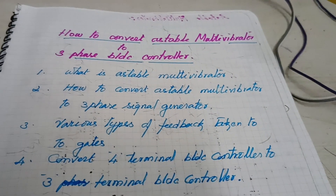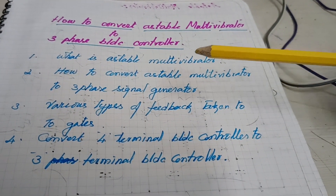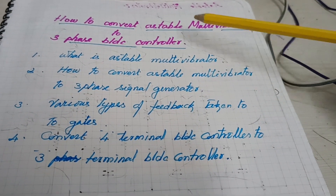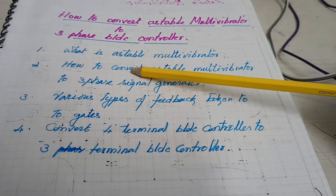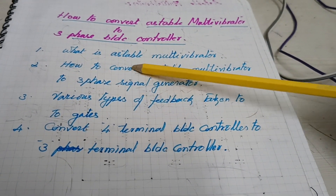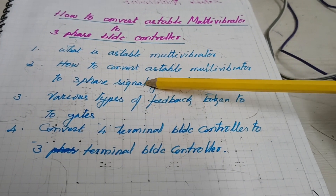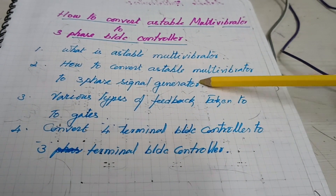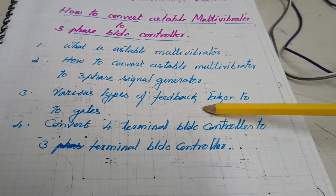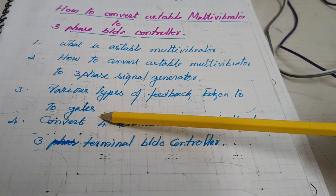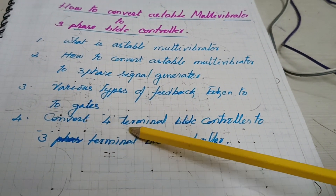Hello friends, today I am going to explain how to convert an astable multivibrator to a three-phase BLDC controller. I want to explain mainly what is an astable multivibrator, how to convert it to a three-phase signal generator, the various types of feedback taken to the gates, and how to convert a four-terminal PLC controller to a three-terminal PLC controller.